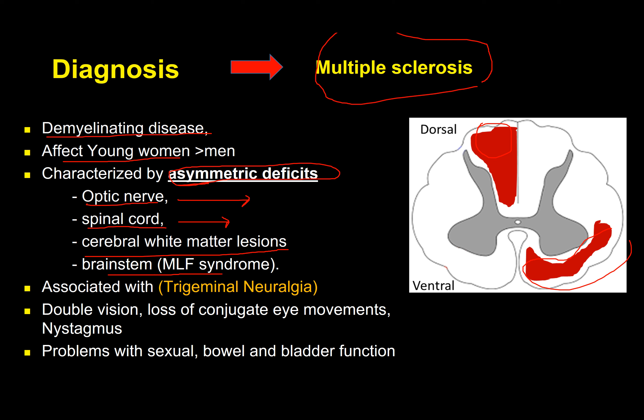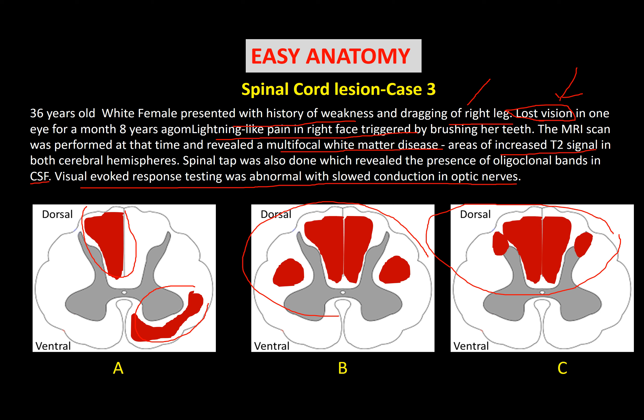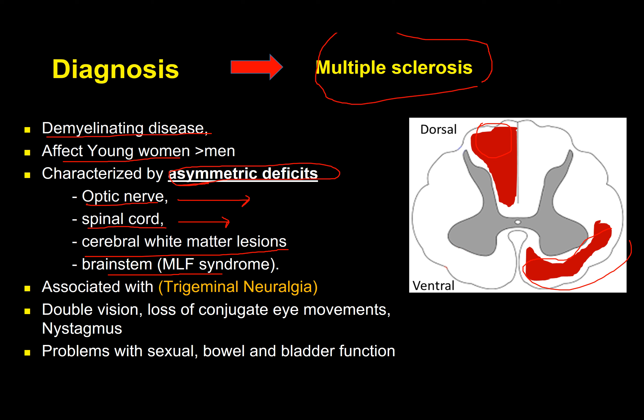Multiple sclerosis also involves cerebral white matter lesions and brainstem lesions, especially medial longitudinal fasciculus syndrome. Our patient also has pain in the facial area similar to trigeminal neuralgia, especially triggered by brushing teeth or applying makeup. Due to the optic nerve involvement, there can also be double vision with less-conjugate eye movement.